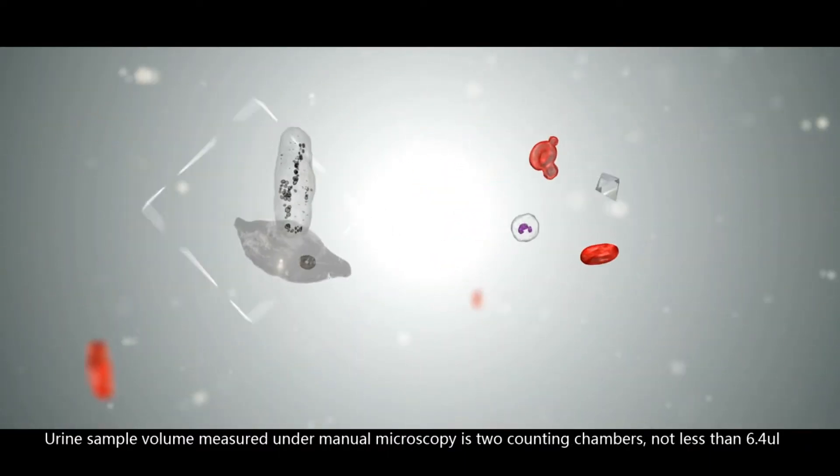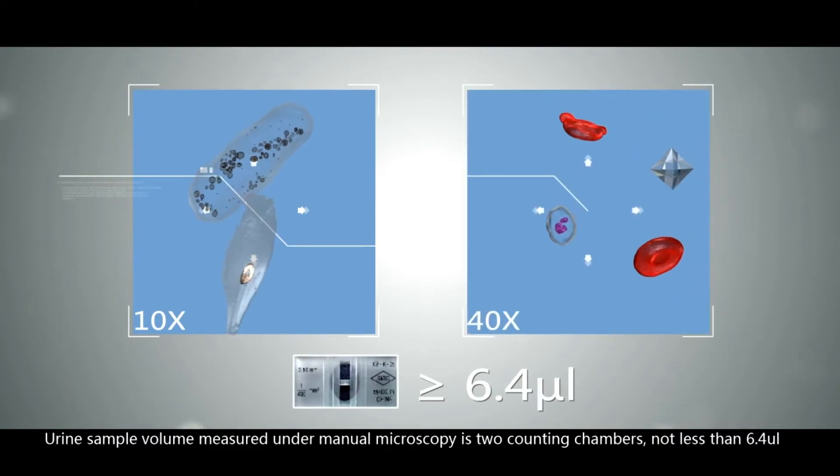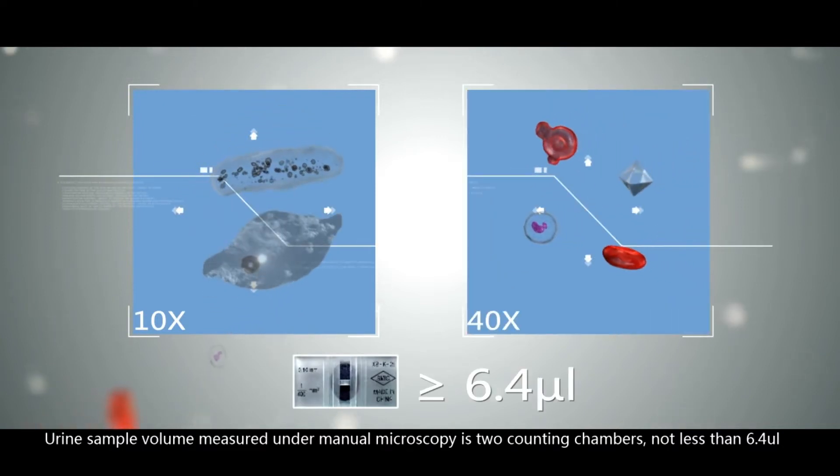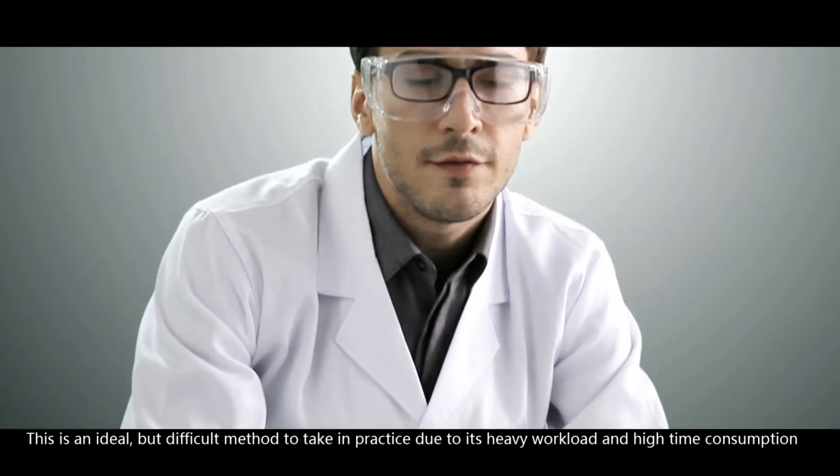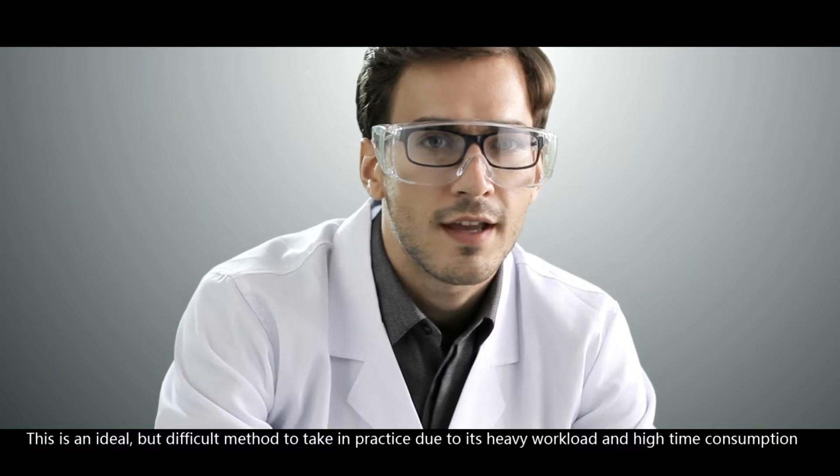The urine sample volume measured under manual microscopy is two counting chambers, not less than 6.4 microliters. This is an ideal but difficult method to take in practice due to its heavy workload and high time consumption.